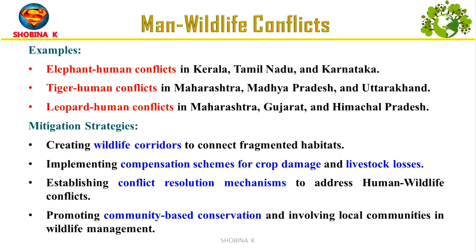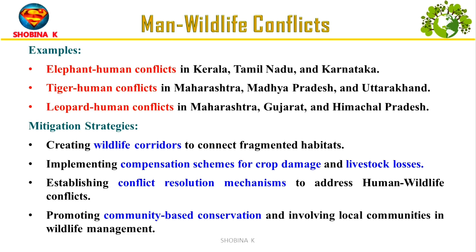Examples of human-wildlife conflict in India include elephant-human conflicts in Kerala, Tamil Nadu and Karnataka; tiger-human conflict in Maharashtra, Madhya Pradesh and Uttarakhand; and leopard-human conflict in Maharashtra, Gujarat and Himachal Pradesh. Mitigation strategies include creating wildlife corridors for safe animal movement, providing financial compensation to farmers when wildlife damages crops or livestock, developing conflict resolution mechanisms, and involving local communities in wildlife protection decisions.